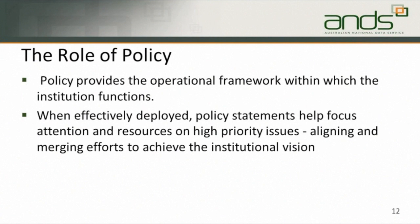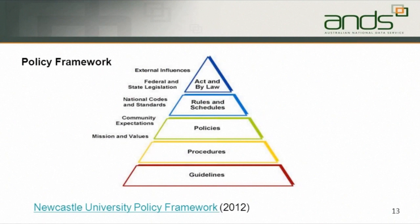The role of policy: policy provides an operational framework within which the institution functions and it helps align the efforts and achieve the institutional vision. A university is a legal entity and as such it is subject to federal and state legislation. It is required to conform to national codes and practices and it has to take into account community expectations and then it has its own internal mission and value statement. All of these provide the context for the institution's governance. The policy is the statement about what the university is going to do, and the procedures and guidelines cover the how.